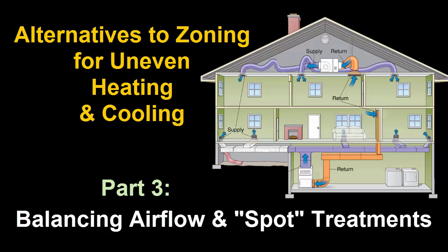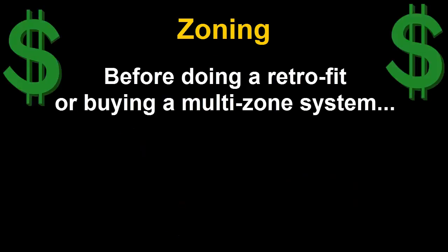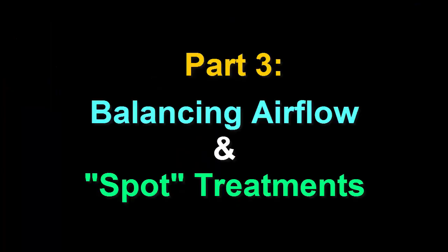This is part three of our three-part series on alternatives to zoning. Zoning refers to creating separate thermostatically controlled areas within your home. But before doing an expensive retrofit or buying a new multi-zone system, try some of these things to address and possibly alleviate uneven temperatures in your home. In this episode, we'll focus on how balancing airflow and employing spot treatments may help.